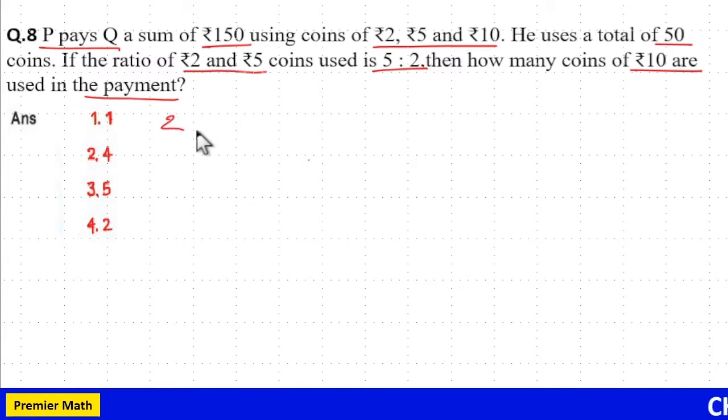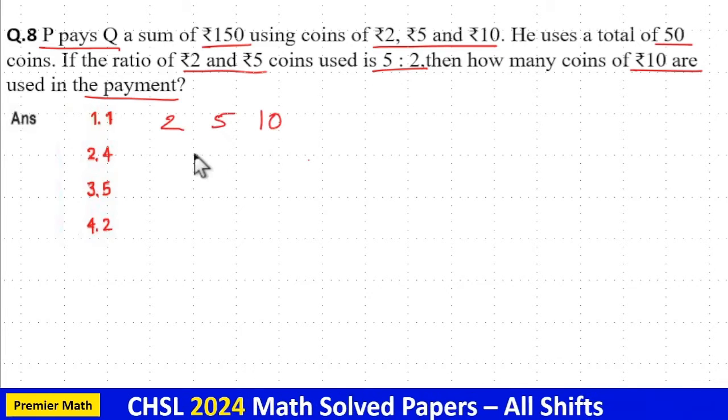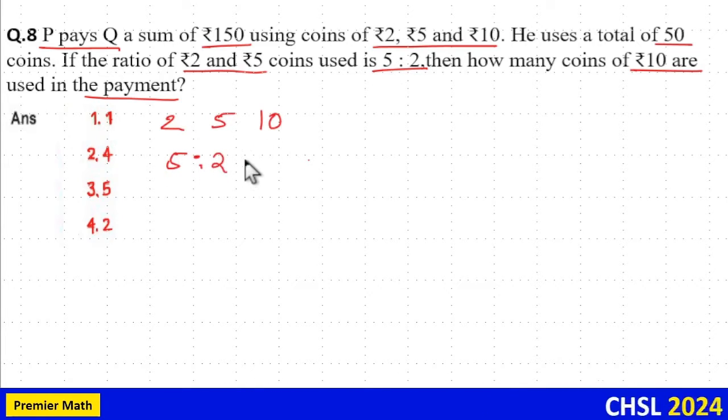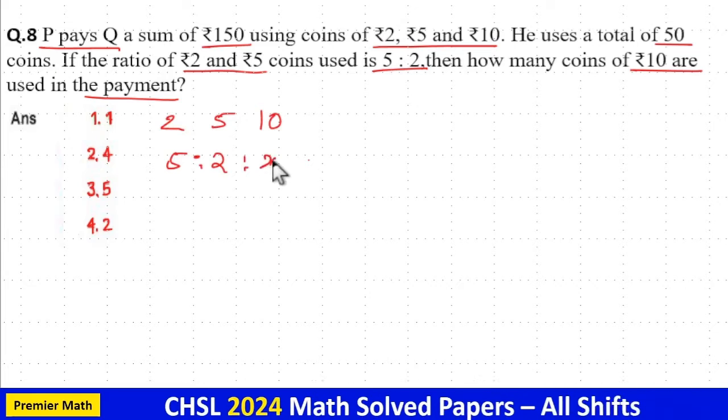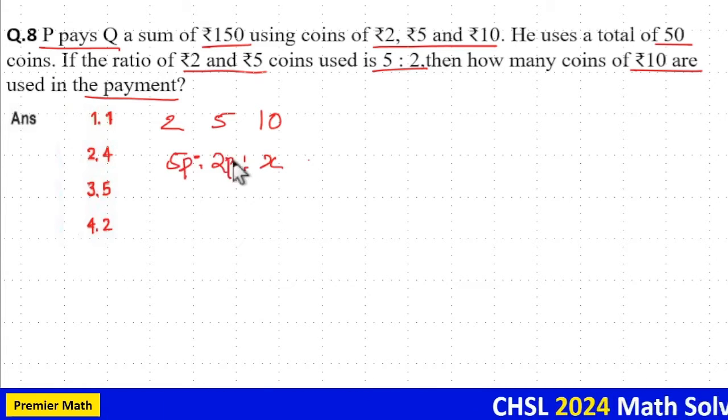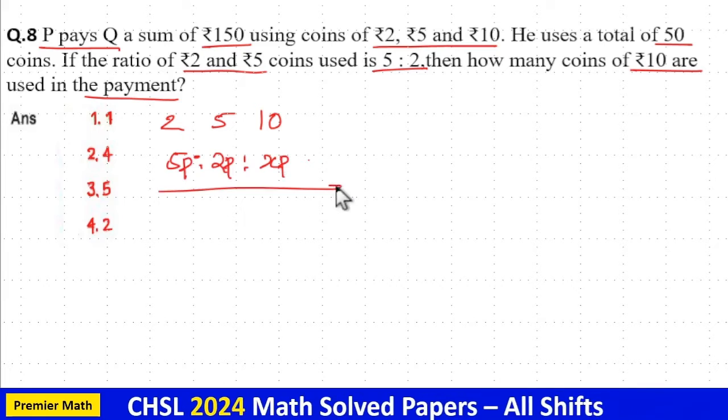Here, 2 rupee, 5 rupee and 10 rupee coins are in the ratio 5 is to 2 is to—I'll take 10 rupee coins as X part. That is, this is like 5 part, 2 part and X part.